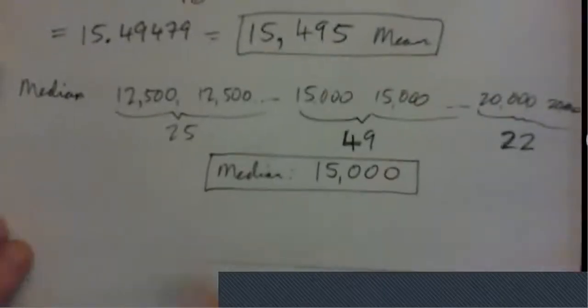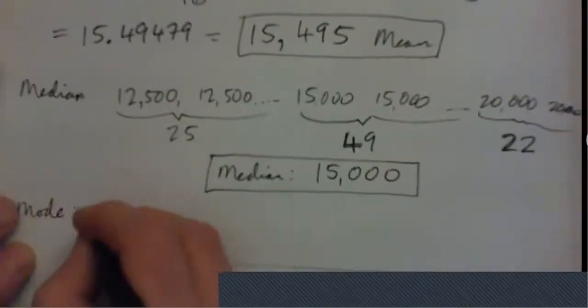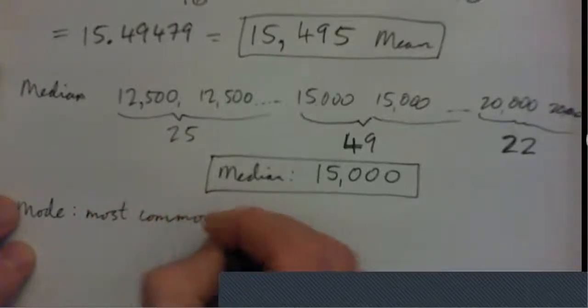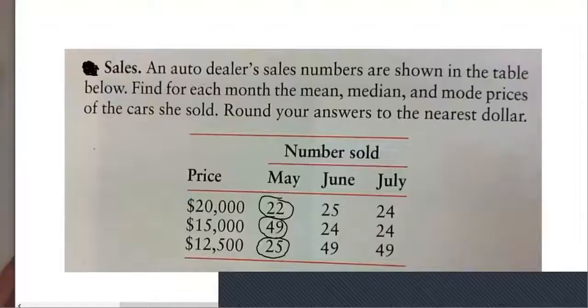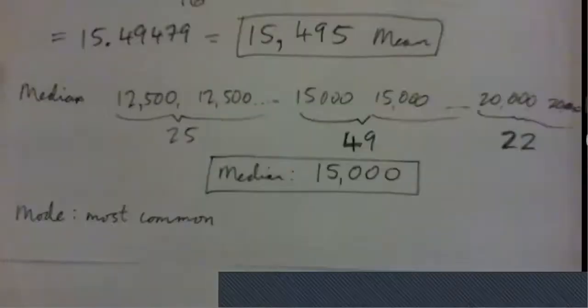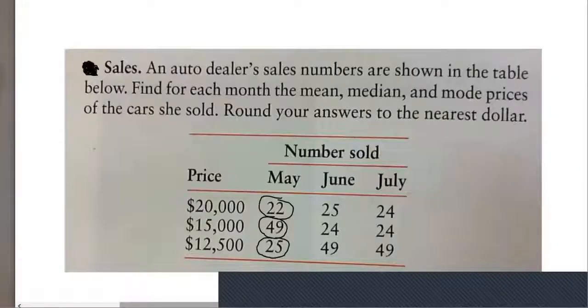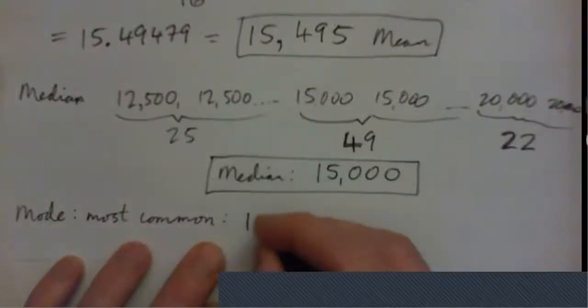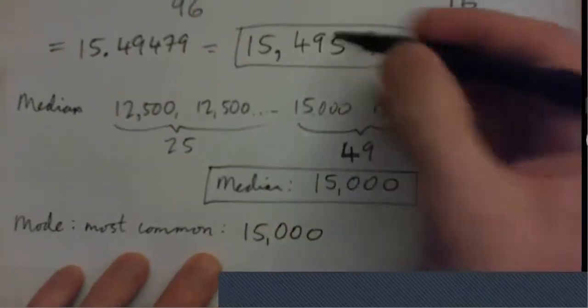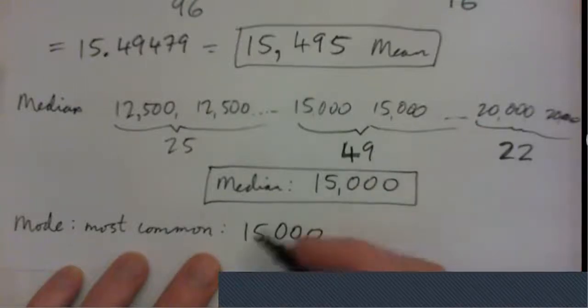Now let's find the mode — the most common sales price. For May, the most common price was $15,000, because we sold 49 cars for $15,000. So: the mean is $15,495, the median is $15,000, and the mode is $15,000. That's May done.